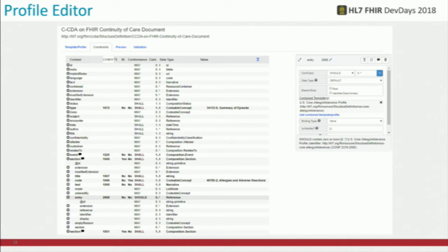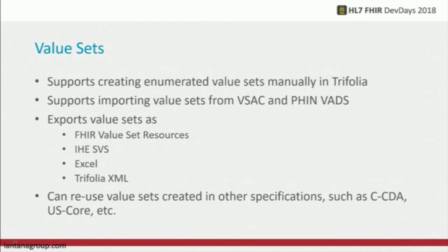The profile editor shows the most common features you do with profiling: changing cardinality, making things that are optional required or repeatable, limiting them to a single value, binding to value sets or single-value code bindings, and doing slicing — for example, creating separate slices on sections. Basically all the basic functions that most analysts will need. We have an integrated value set editor inside Trifolia for doing simple enumerated value sets — just a list of codes. We don't do complex stuff like taking everything below a certain code in SNOMED, so you do need to specify all the codes. But it does support importing value sets from other systems.